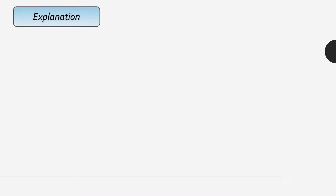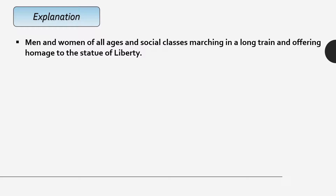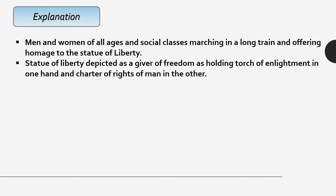Here is the explanation of the painting prepared by Frederick Sawyer. In this long trail, we find men and women of all ages and all social classes marching and offering homage to the Statue of Liberty. Next to that, the Statue of Liberty is depicted as a giver of freedom — shown as providing freedom to the people. In one hand, she is holding the torch of enlightenment, and in the other hand, there is a chart on which the rights of man are written.